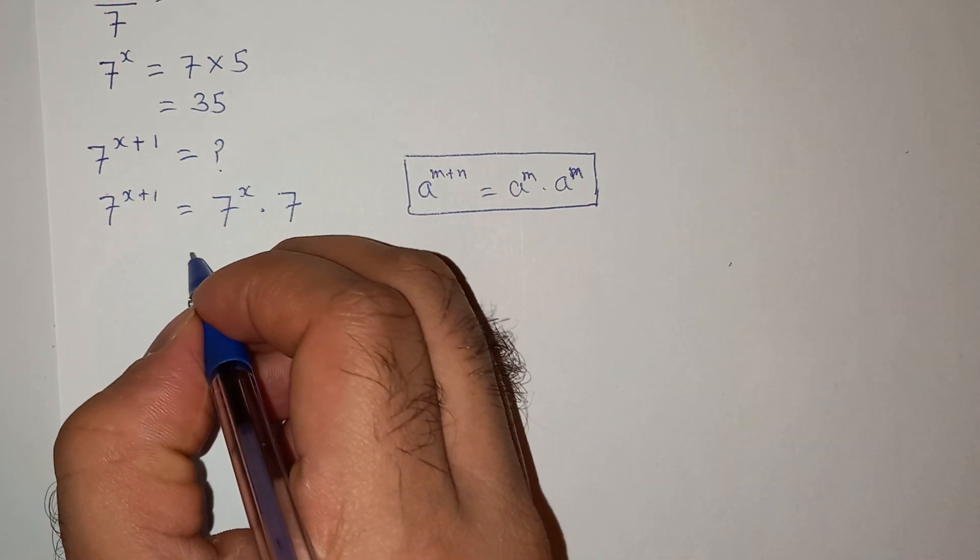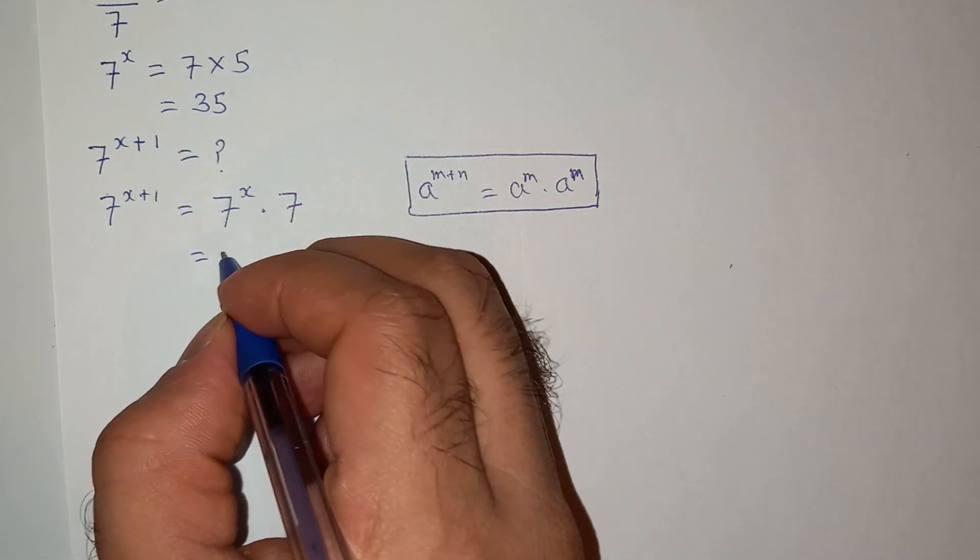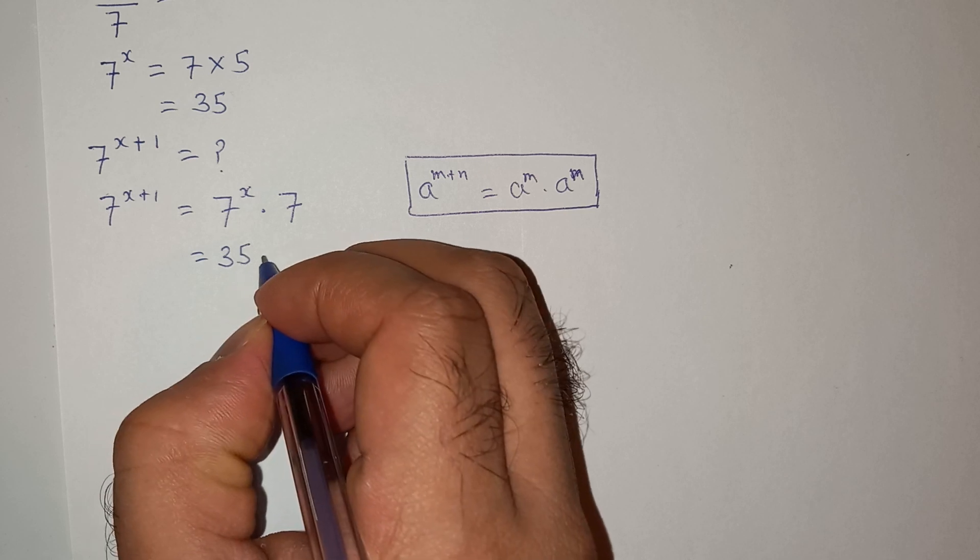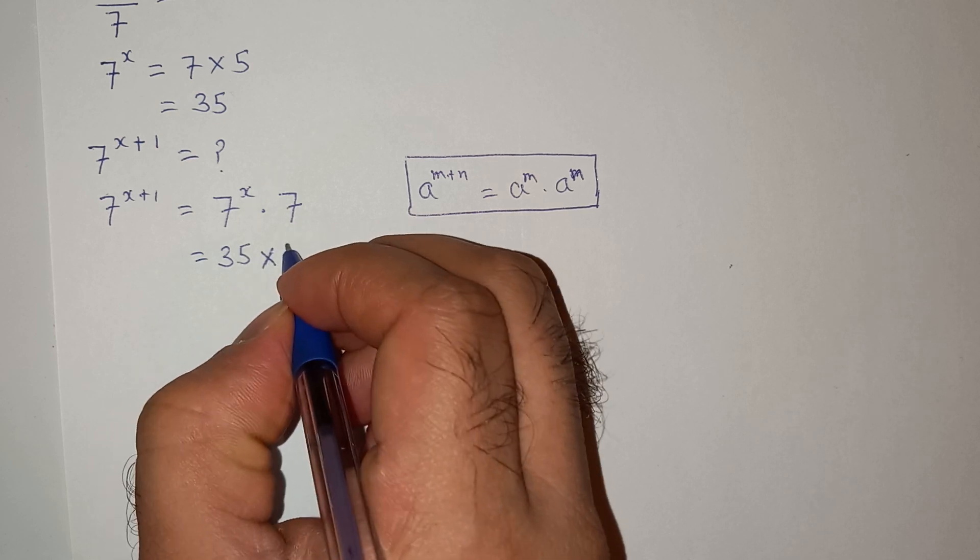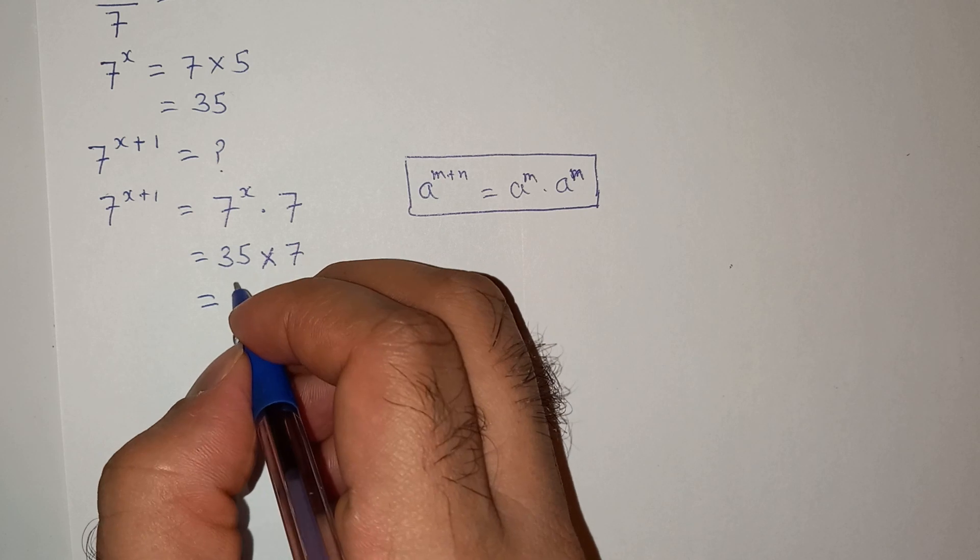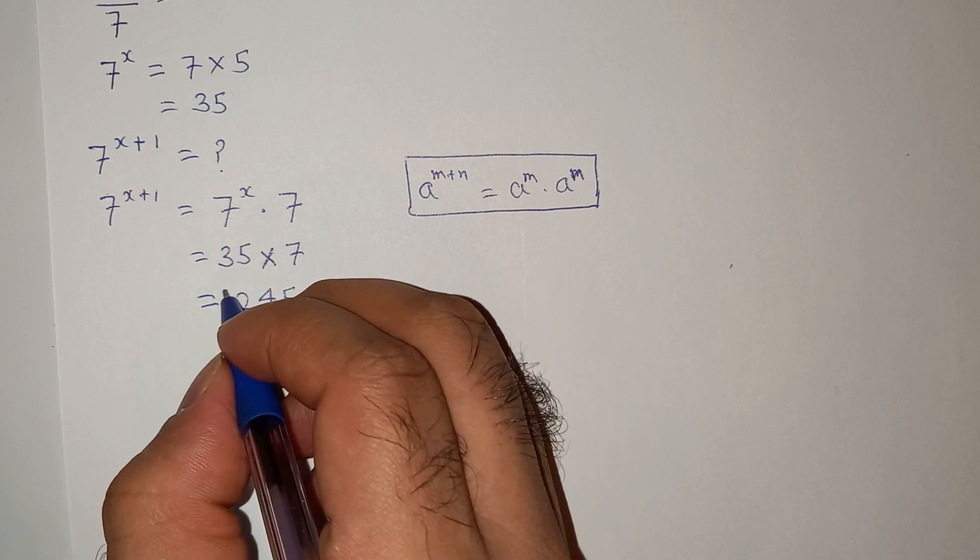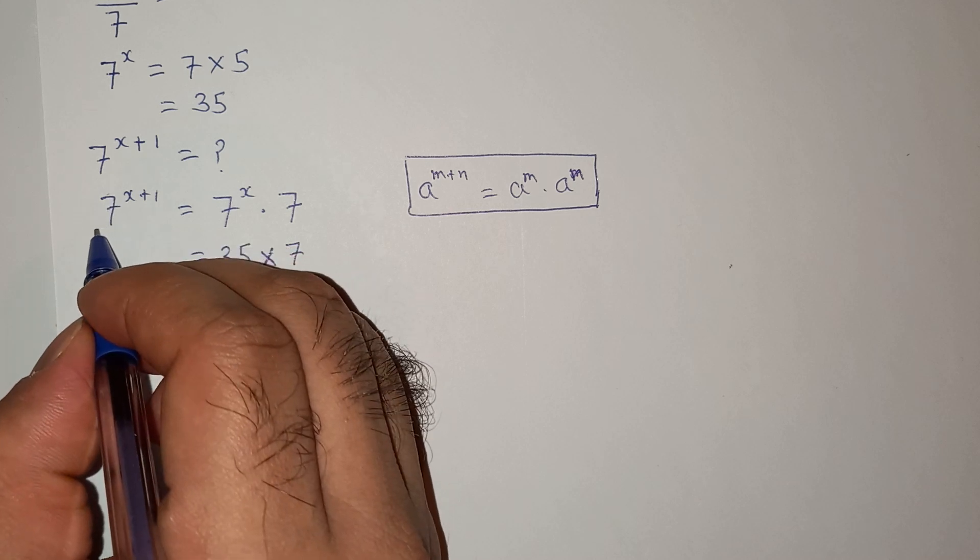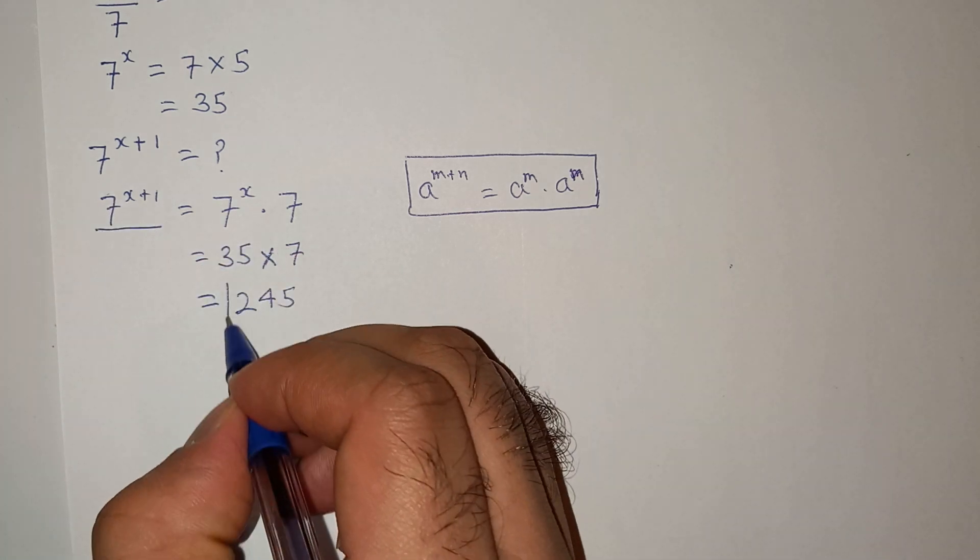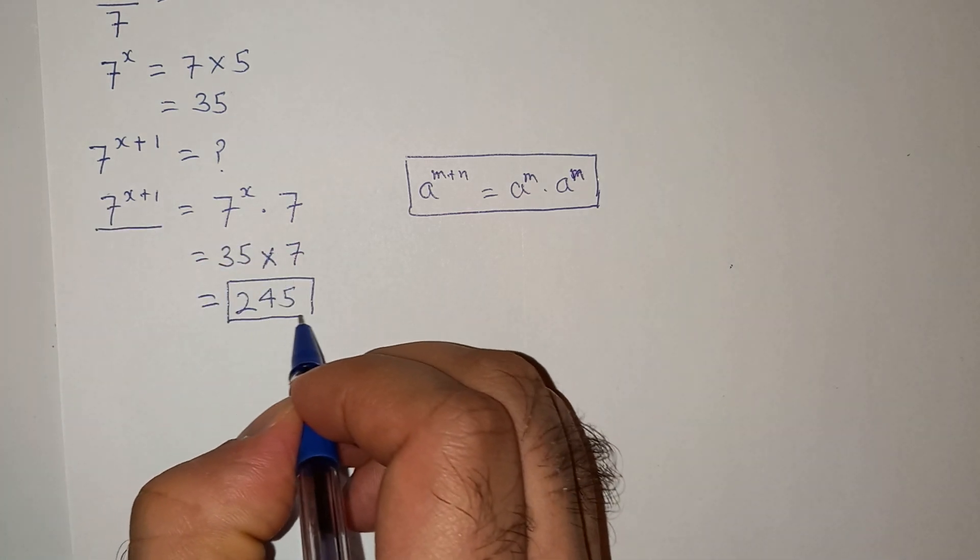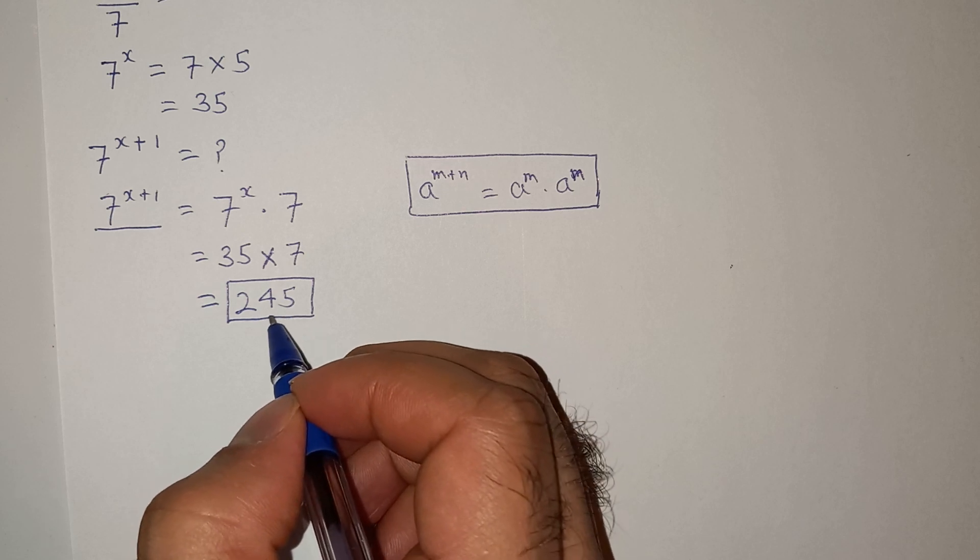Now we know that the value of 7 power x is 35 and we have to multiply with 7. So the value comes out to be 245. So the value of 7 power x plus 1 is 245.